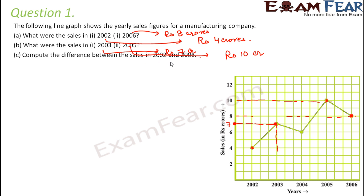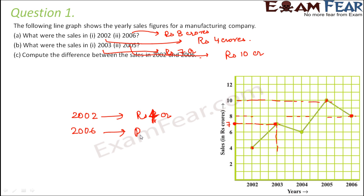Next question: compute the difference between the sales in 2002 and 2006. Sales in 2002 were rupees 4 crores and in 2006 they were rupees 8 crores. Therefore the difference would be 8 minus 4, which equals 4 crores.